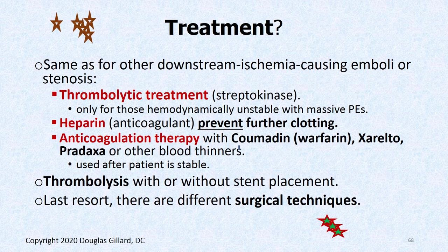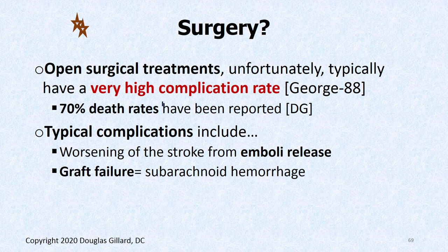Treatment for dissections: use streptokinase to break up thrombus formation, heparin to prevent further clotting, and anticoagulation therapy like Coumadin or Xarelto. Thrombolysis is very dicey in this region — stenting has been attempted but with very high death rates, up to 70% following these types of techniques.